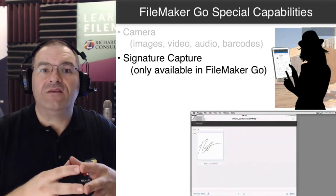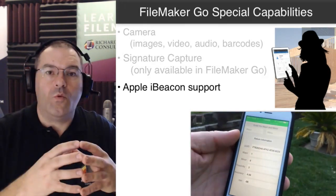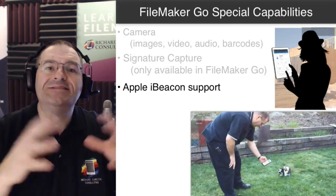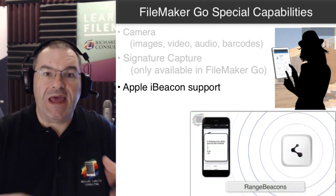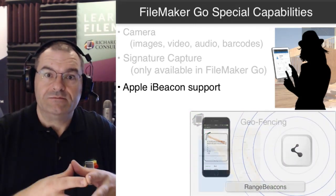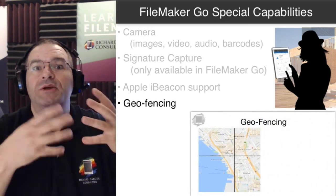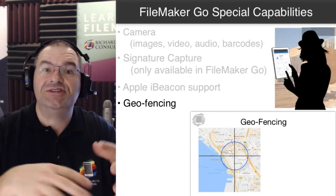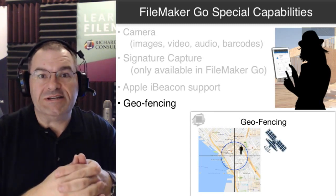There's also access to Apple's iBeacon technology — the wireless Bluetooth transponders that send out little signals that iOS devices can monitor and capture. There's also access to geofencing, so if you want to set up a geofencing application, that's part of the FileMaker 16 platform.